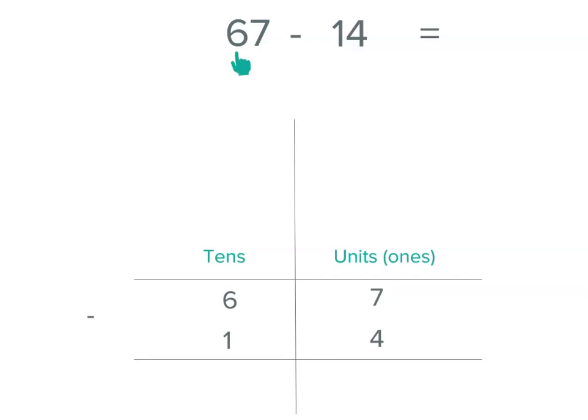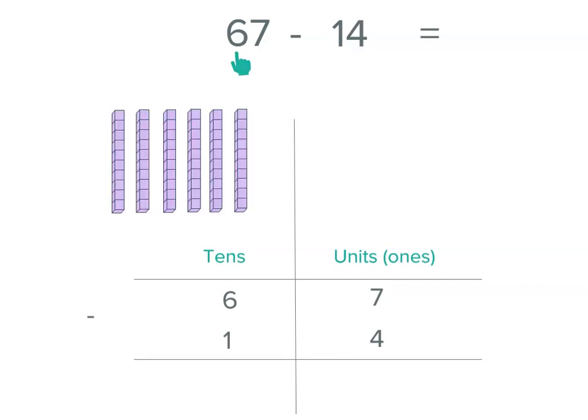let's put our models in as well. Why not? We've got 6 tens and 7 units. That's the total that we start with. And that's the number we always write at the top of our problem.